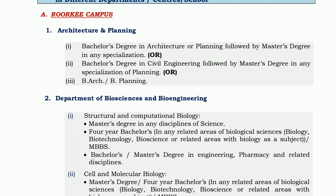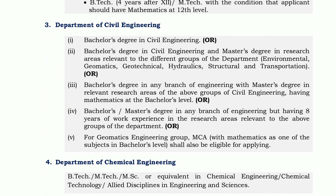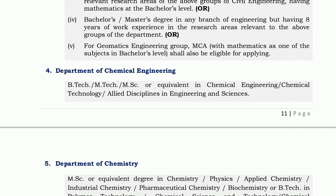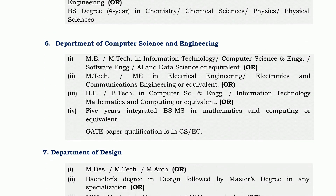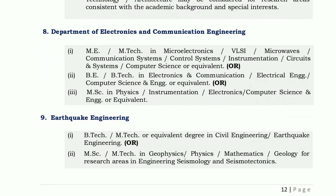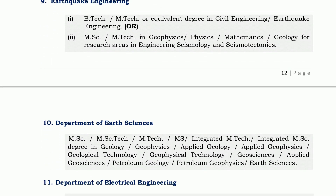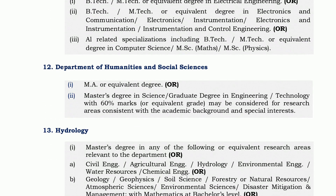PhD programs are available at Roorkee campus in: Architecture and Planning, Department of Bioscience and Bioengineering, Department of Civil Engineering, Department of Chemical Engineering, Department of Chemistry, Department of Computer Science and Engineering, Department of Design, Department of Electronics and Communication Engineering, Earthquake Engineering, Department of Earth Sciences, and Department of Electrical Engineering.